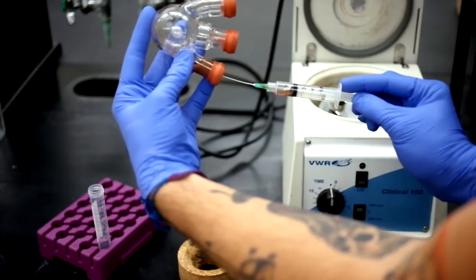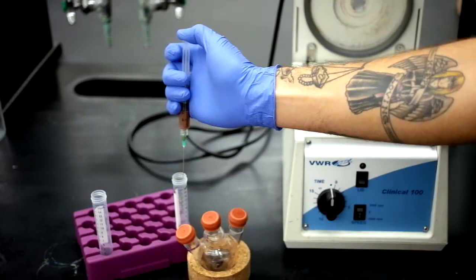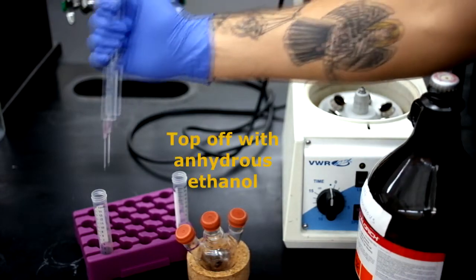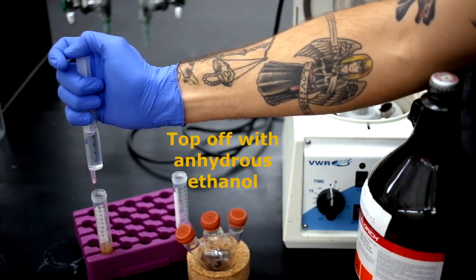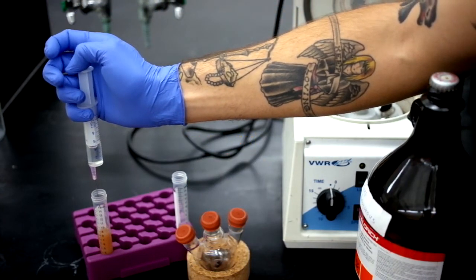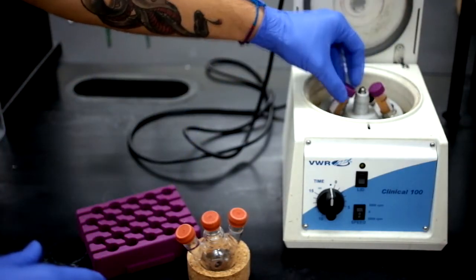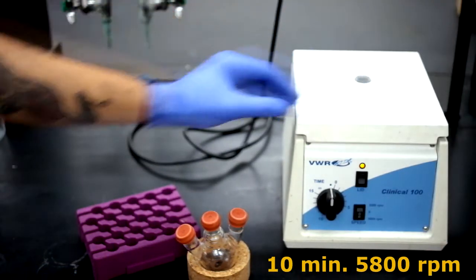Once the reaction flask has cooled down to about room temperature, you can take the product and split it between two centrifuge tubes. Then top those tubes off to 15 milliliters with anhydrous ethanol. Place the centrifuge tubes into the centrifuge and let them spin for about 10 minutes at 5800 RPM.